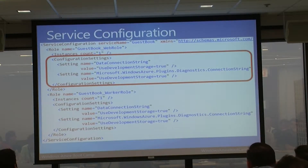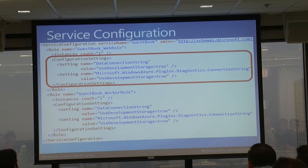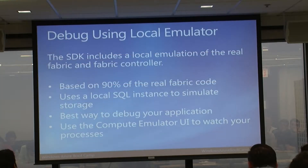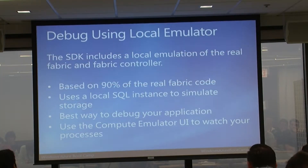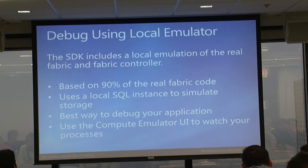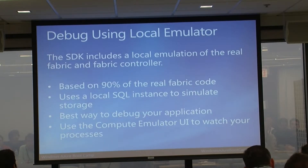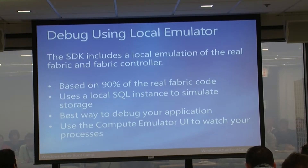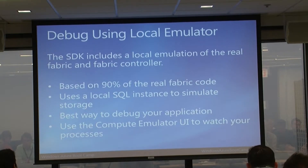The configuration file has the service name, broken down by role with separate settings for web role and worker role. Here's where you set the number of instances - one is for dev and test; in production you probably want at least two for reliability. You can scale that up or down by changing that setting, and that number of services will be instantiated in the cloud.